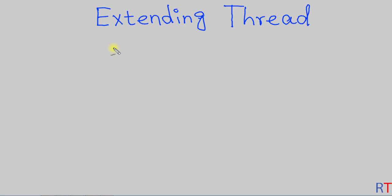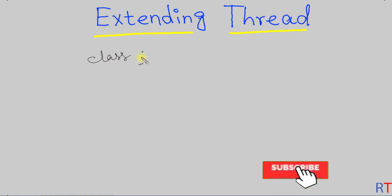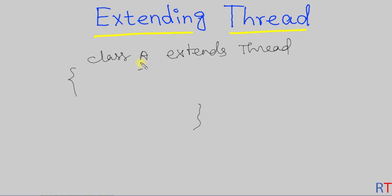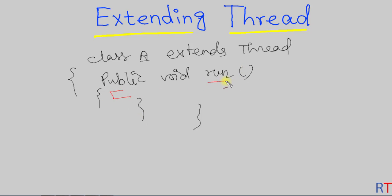In this video we're going to see how we can create one thread by extending the Thread class. For example, if we have one class A, we can create one thread by extending the Thread class. Inside class A we have to define the public void run method — whatever code we write inside the run method will be executed once the thread has been started. To start the thread we have to use the object of class A and call the start method.